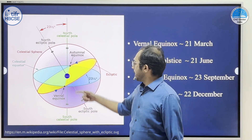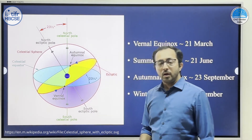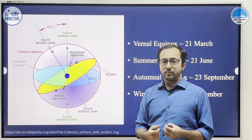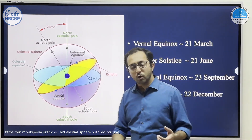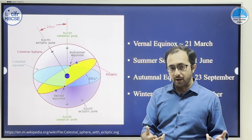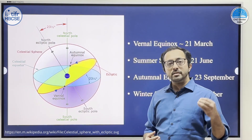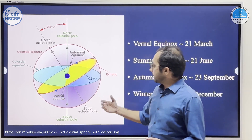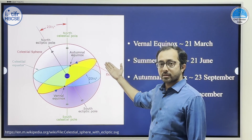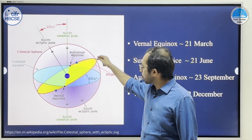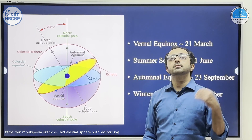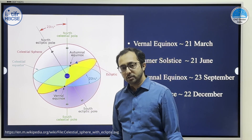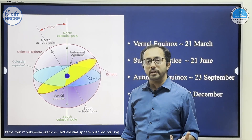When the sun is at summer solstice, the northern hemisphere experiences the longest day and the shortest night. When the sun is at winter solstice, the northern hemisphere experiences the longest night and the shortest day. In the southern hemisphere, when the sun is at summer solstice at 23.5 degrees north, the southern hemisphere experiences the longest night and the shortest day. Conversely, when the sun is at winter solstice, the southern hemisphere experiences the longest day and the shortest night.